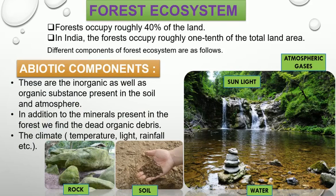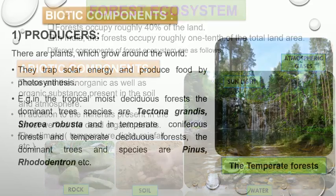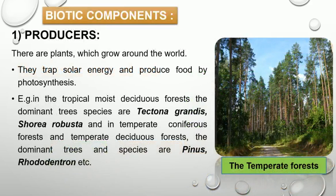Abiotic components interact with biotic components. The biotic components are the living factors, which include producers, consumers and decomposers. The producers are the autotrophs. In a forest, the producers are mainly plants. Plants trap solar energy in the presence of water and carbon dioxide, and produce food by the process of photosynthesis. Tectona grandis and Shorea robusta are the dominant plant species found in a tropical deciduous forest.